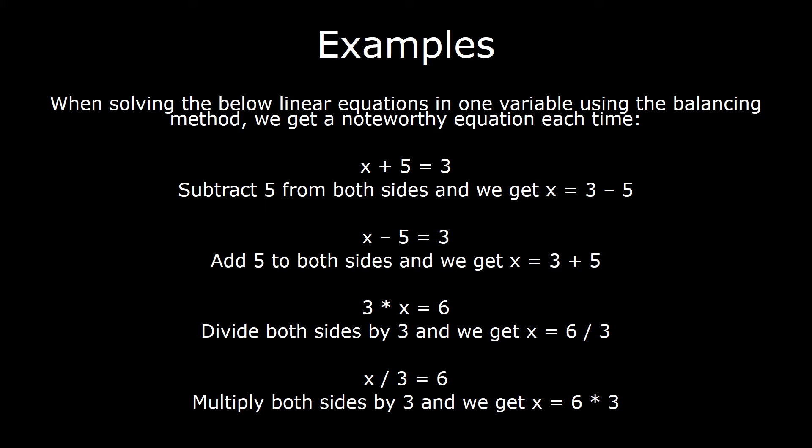Example 2: x minus 5 equals 3. We'll solve this using the balancing method. On the LHS we have x minus 5, and we want to get rid of the minus 5. So we add 5 on both sides. The LHS becomes x minus 5 plus 5, which is just x, and the RHS becomes 3 plus 5.